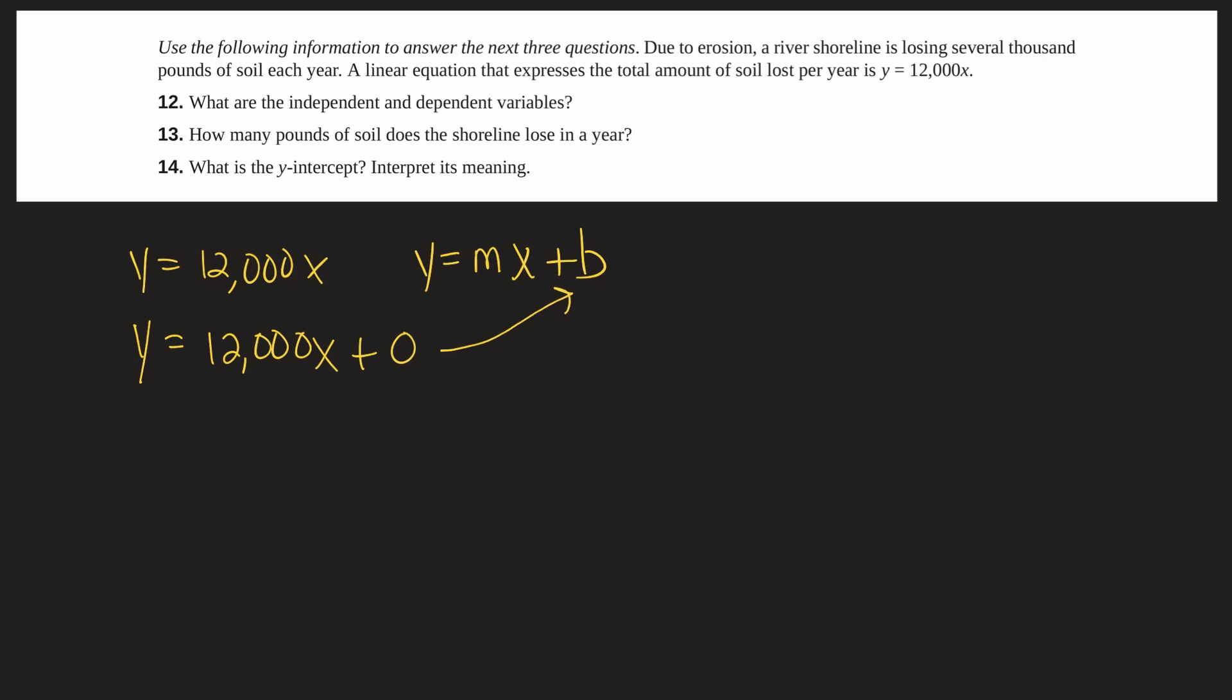So don't get confused. When you see an equation that looks like this and it looks like the b is missing the y intercept, it's not. It's there it's just zero. So what we know is that in this case b is zero, the y intercept is the point zero zero which is the origin on our graph.